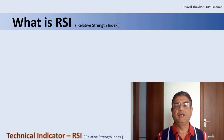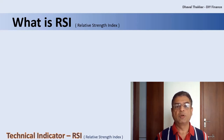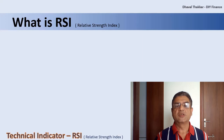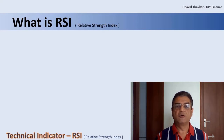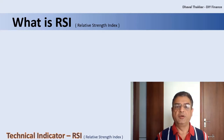RSI can be defined as a momentum indicator that compares the magnitude of recent gains to recent losses in order to evaluate whether the investment instrument is overbought or oversold. In simple words, the RSI value would indicate whether the investment instrument — here we will refer to it as a mutual fund — is overvalued or undervalued.